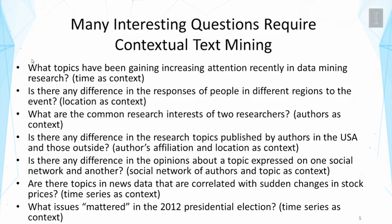Is there any difference in the opinions about a topic expressed on one social network versus another? Here, the social network of authors and the topic can be the context. Are there topics in news data that are correlated with sudden changes in stock prices? In this case, we can use a time series such as stock prices as context. What issues mattered in the 2012 presidential election? Here again, a time series serves as context. As you can see, the list can go on and on — contextual text mining can have many applications.